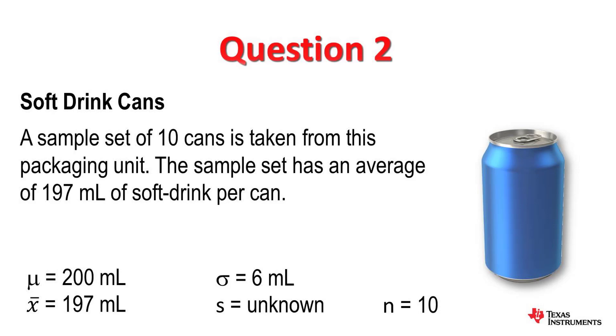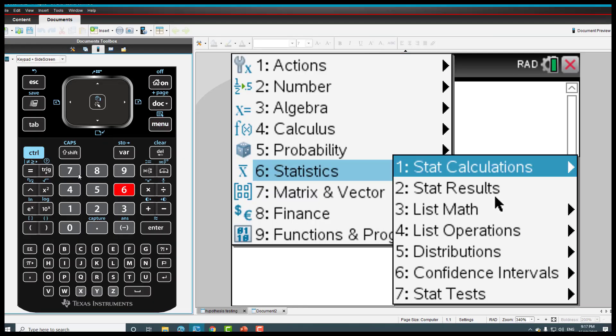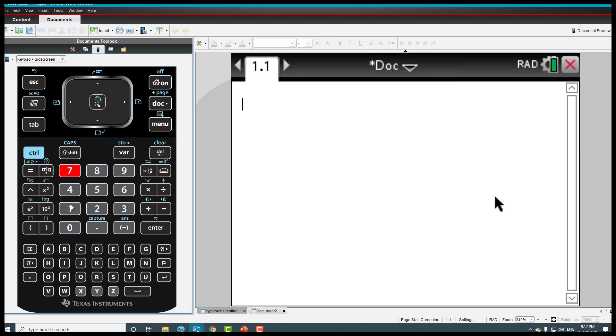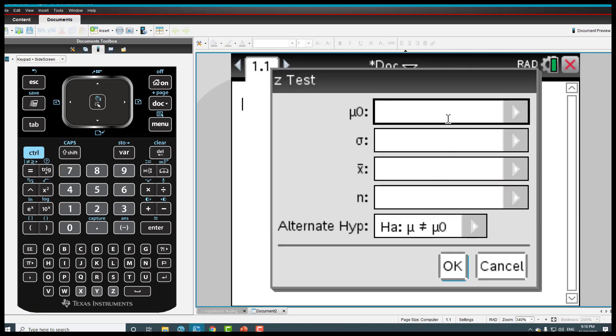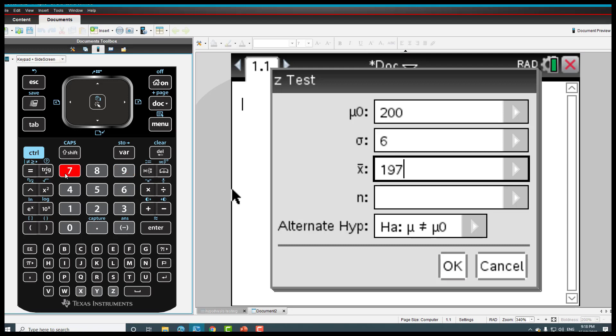On the CAS, statistics, statistics test, and then the Z-test, change that to statistics. The capacity is 200mL, standard deviation is 6, and 197 was the sample average. The number of samples is 10. We are saying that the sample mean is less than the actual mean.